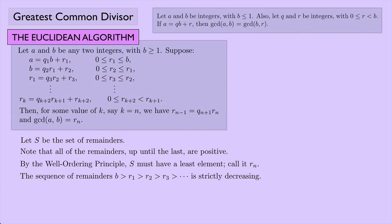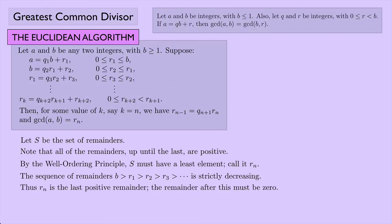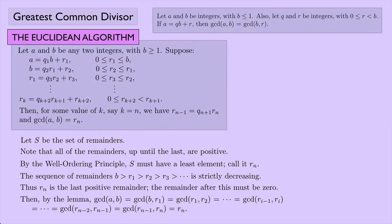The sequence of remainders B greater than R1 greater than R2, and so on, is strictly decreasing — they're getting smaller and smaller and none of them are equal — and we know that these are all positive. So R sub N has to be the last positive remainder, and the remainder after that one was zero. By the lemma, GCD of A and B equals the greatest common divisor of B and R1, and so on — you keep applying the lemma as many times as you need until you get to the greatest common divisor of R_{n-1} and R_n, and that has to be R_n. It's probably not super important that you know how to prove the Euclidean algorithm, but you definitely should know how to use it.